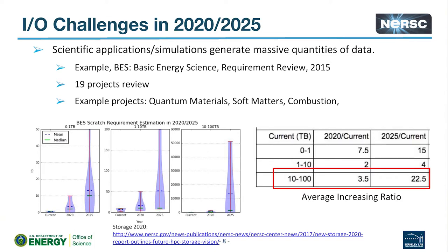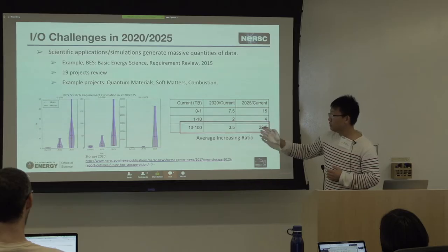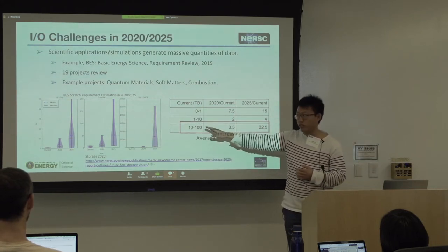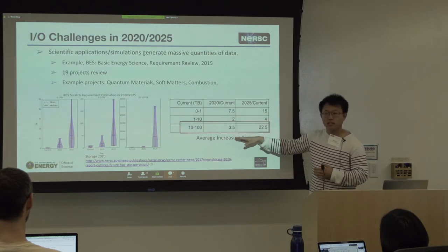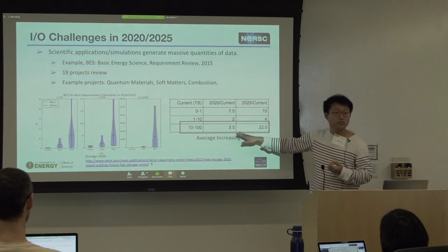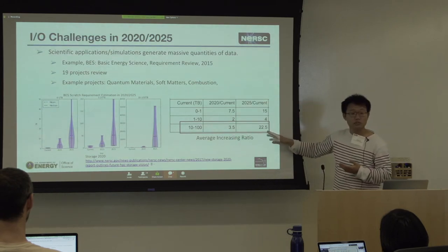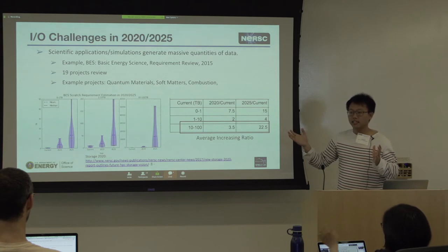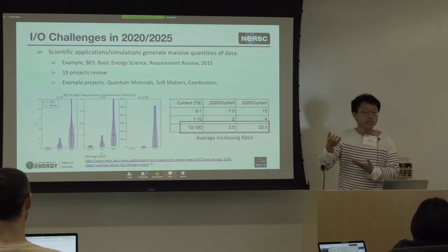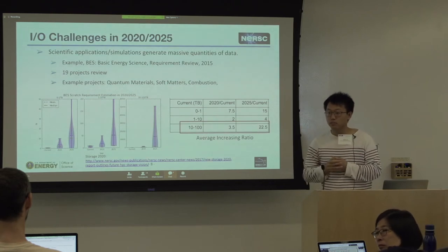We did some study and believe the I/O challenge will become more severe in the next few years — by 2020 or 2025. If your application currently produces 10 to 100 terabytes of data, two years from now it can produce three times more, and seven years from now it will be 22 times more. Given that huge amount of data, efficiently loading it into memory for data analysis will be very challenging.